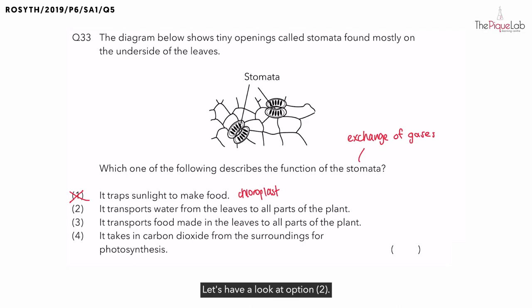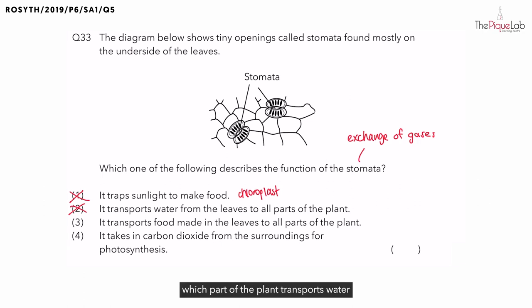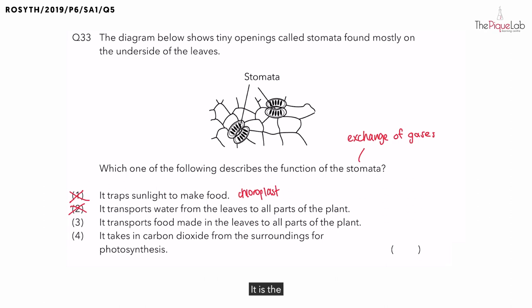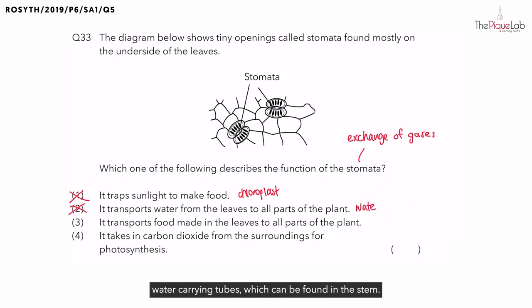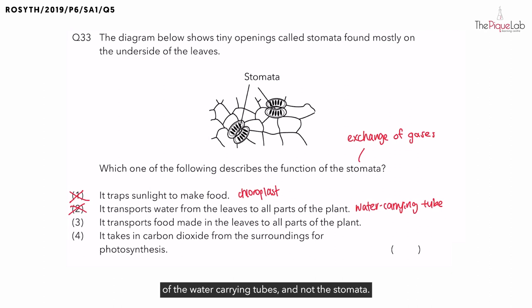Let's have a look at option two. The stomata transports water from the leaves to all parts of the plant. Is this true? No. Instead, it is the water-carrying tubes found in the stem that transport water from the leaves to all parts of the plant. Therefore, option two is the function of the water-carrying tubes and not the stomata.